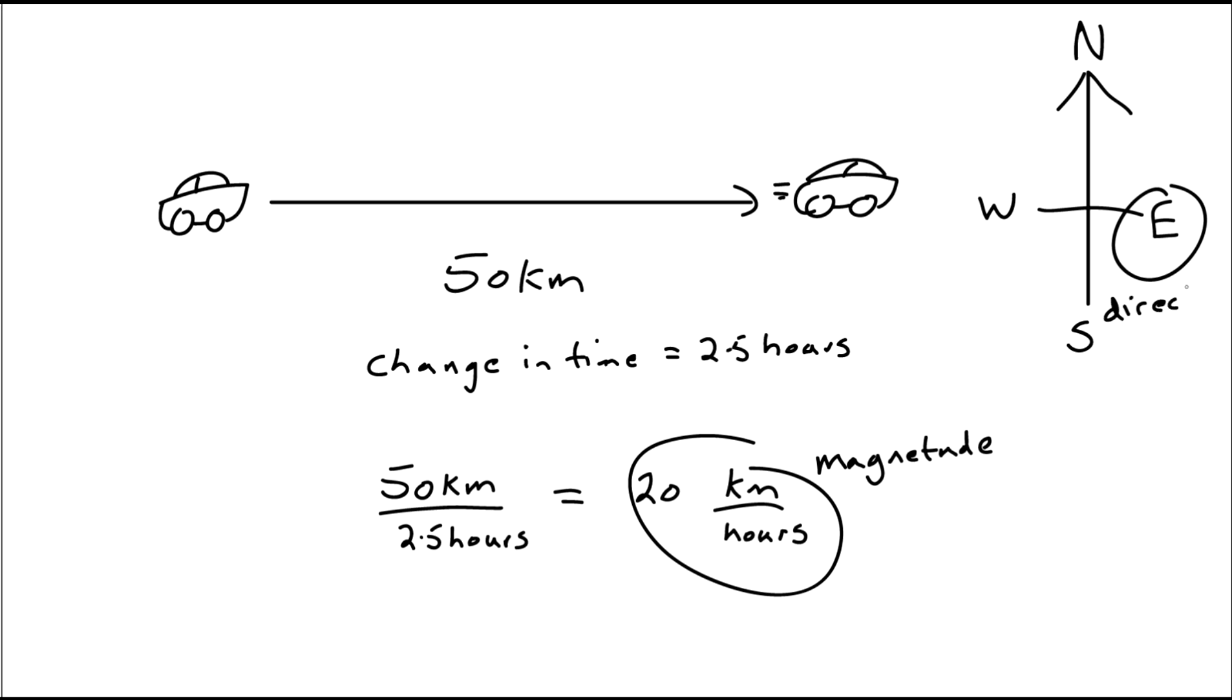When both the speed and the direction are known, we call it velocity to distinguish it from speed.